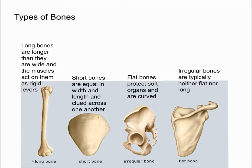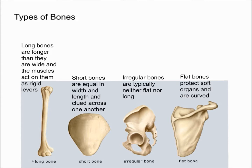In this video, I'm going to talk about the different shapes of bones. We have four types of bones: long bones, short bones, flat bones, and irregular bones. Let's start off by talking about what long bones are.